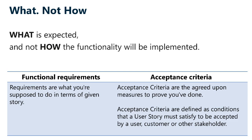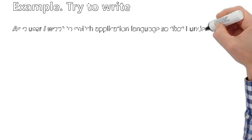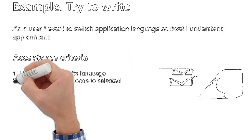Functional requirements and acceptance criteria are different things. Requirements describe what you are supposed to do in terms of a given story or functional requirement. Acceptance criteria are the agreed-upon measures to prove that you have done it. Acceptance criteria define conditions that a user story must specify in order to be accepted by users.